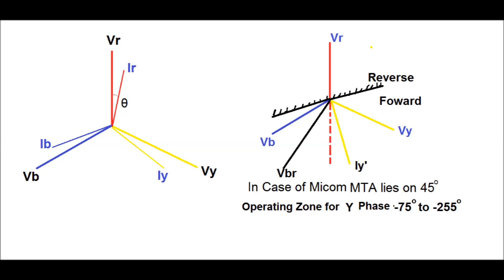Similarly, for a fault at Y phase, the reference voltage is taken as VBR, that is the voltage between B phase and red phase. Since for the MICOM relay the maximum torque angle lies at 45 degrees, the fault current will lead by 45 degrees from the reference voltage phasor VBR. Therefore, the operating zone for Y phase will be between minus 75 degrees to minus 255 degrees. Beyond this region, it will block tripping — that is, it remains in the reverse zone.